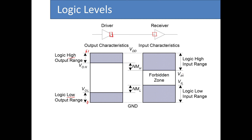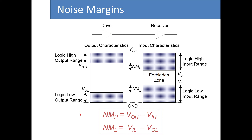We can now define the noise margins. The high noise margin is VOH minus VIH, and for this to be valid it must be a positive value. The low noise margin is VIL minus VOL — the input characteristic of the receiver minus the output characteristic of the driver.